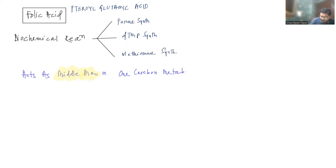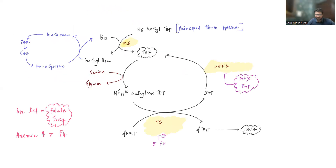Among these three, we have already discussed dTMP synthesis and methionine synthesis. These two reactions also require vitamin B12. Vitamin B12 and folic acid together take part in these reactions — there will be formation of methionine, and also dTMP synthesis that is required for DNA synthesis.